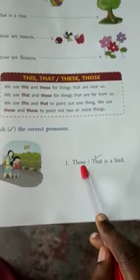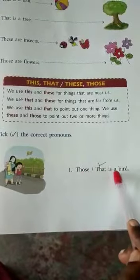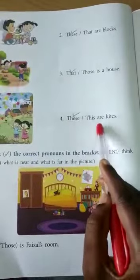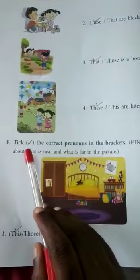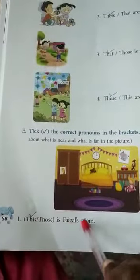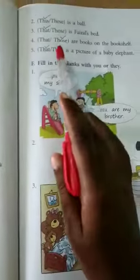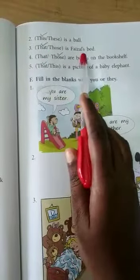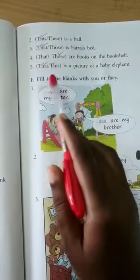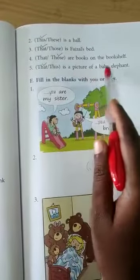Exercise: Tick the correct pronouns. Number one: That is a bird. These are blocks. That is a house. These are eyes. Now tick the correct pronouns — hints are given in the pictures. This is Faisal's room. This is a ball. That is Faisal's bed. Those are books on the bookshelf. That is a picture of a baby elephant.